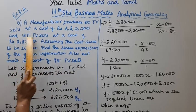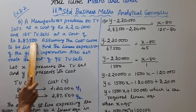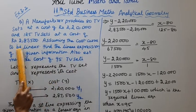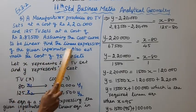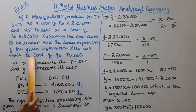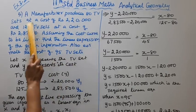Assume the cost curve to be linear. Find the linear expression to the given information. Also estimate the cost of 95 TV sets. We need to find the linear expression. We already covered this in tenth standard.